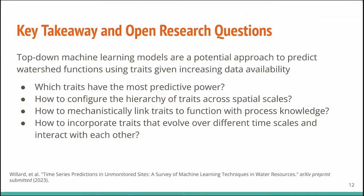What these results show is that the top-down continental machine learning model is remarkably able to learn from the diversity of data available across all 787 sites with the 27 different trait inputs. I want to conclude with the key takeaway that building top-down machine learning models that include as much data as available are a potential approach for predicting watershed functions and their response to disturbance at large spatial scales. Open research questions include: what traits have the most predictive power, how do we configure traits across spatial scales, how do we link traits mechanistically to function in process models, and how do we incorporate dynamic traits in these models.